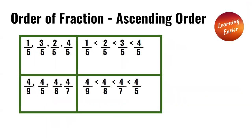Order of fractions — ascending order. First, we have one over five, three over five, two over five, and four over five. Since all of the fractions have the same denominator, we compare their numerators. One is the smallest, then two over five, then three over five, then four over five. So: one over five is less than two over five, which is less than three over five, which is less than four over five.